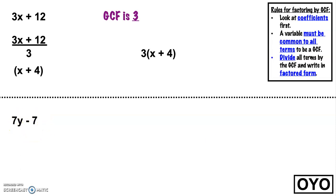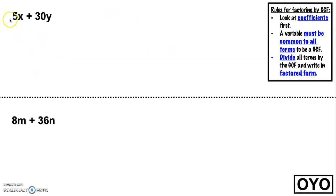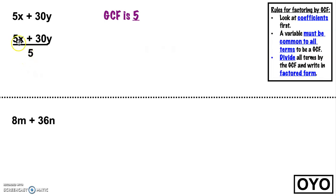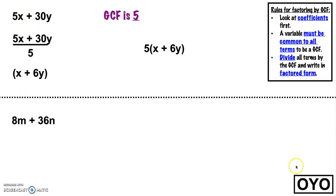Let's take a look at 5x plus 30y. Look at the coefficients first — 5 and 30 are both divisible by 5. Now look at the variables: we don't have any variables in common, so the only thing we can pull out is a 5. Dividing by 5 leaves us with x plus 6y. To write it in factored form, our GCF goes out front times what we got when we divided it out: 5 times x plus 6y. We can check our work — if we multiply the 5 back into that binomial, we get 5x plus 30y, which is what we started with.